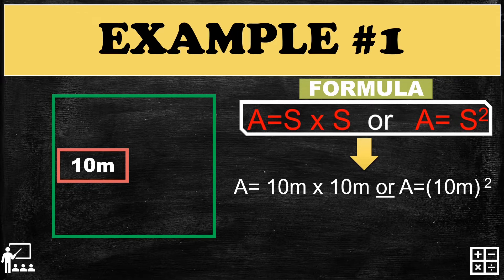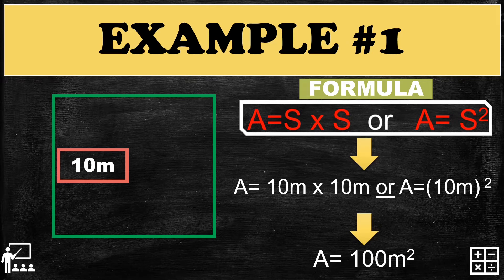It is the same — we multiply the number by itself. So 10 multiplied by 10 gives you 100. For the units, m times m gives us m squared. The answer for this example is 100 meters squared.